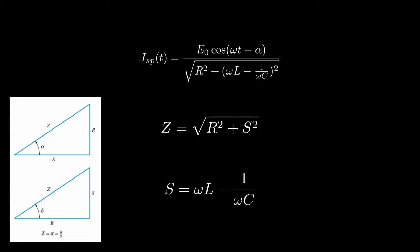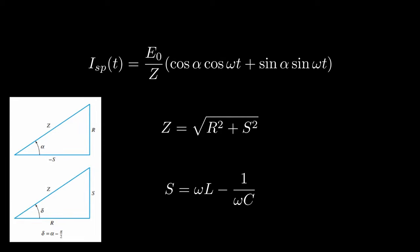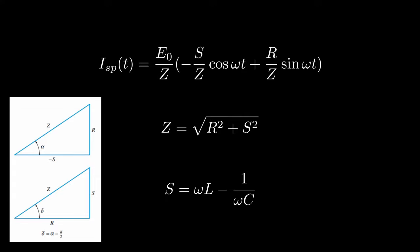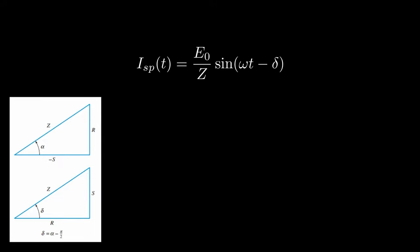To convert our expression to a sine form, we can first plug in Z for the denominator, and then expand the cosine term. And now we can substitute in negative S over Z for cosine of alpha, and R over Z for sine of alpha. Our expression now fits the sine difference identity, so we can rewrite it as the steady periodic current is equal to E0 over Z times the sine of omega T minus what we call the delay angle. This is also pictured on the left hand side.